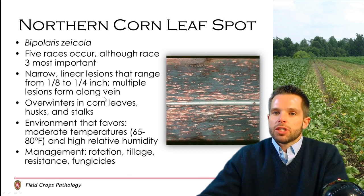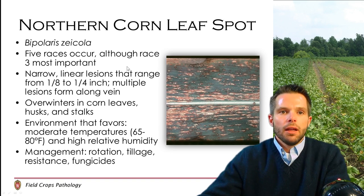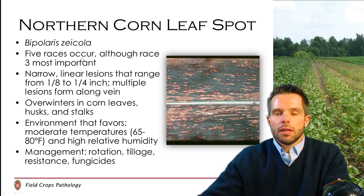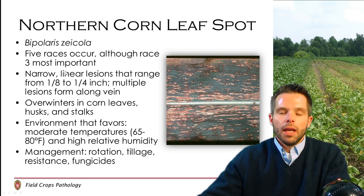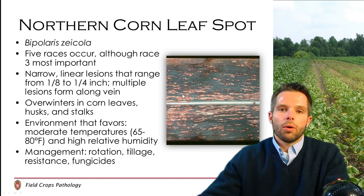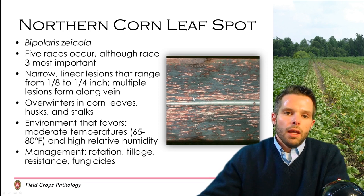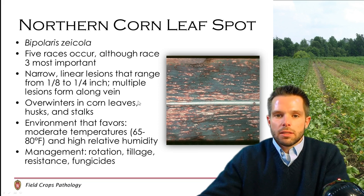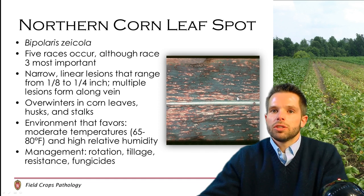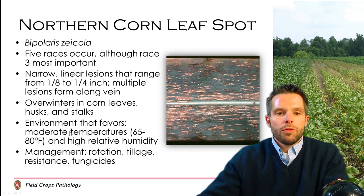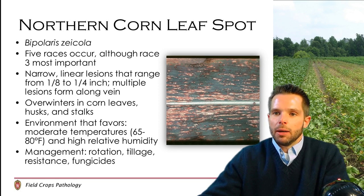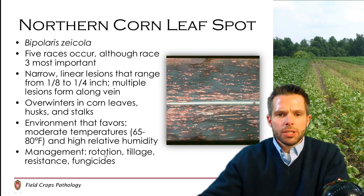Northern corn leaf spot can also be a problem occasionally in Wisconsin. There are several different races that can cause this disease, although race three seems to be the most important. It causes narrow linear lesions that range from about an eighth to a quarter inch, and these can be numerous on a leaf and can coalesce to form larger lesions. It overwinters in corn residue on husks and stalks, so residue management and tillage can be very important. The environment that favors this disease is moderate temperatures of 65 to 80 degrees and very high relative humidity. Management includes rotation, tillage, resistance, and fungicides.